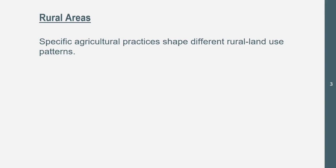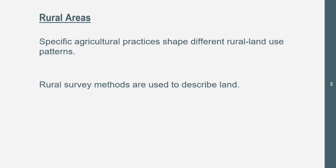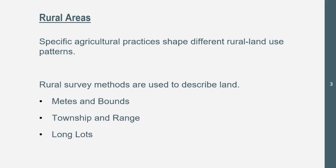Specific agricultural practices shape different rural land use patterns. That linear area could have agricultural practices in people's backyards or farmland all around it — so we have that one strip of infrastructure and buildings because there's farming around there for agriculture. Or in that clustered rural area, there could be a bunch of farmland around there that clusters it together. Rural survey methods are used to describe land, and the three we're going to go over are metes and bounds, township and range, and long lots.